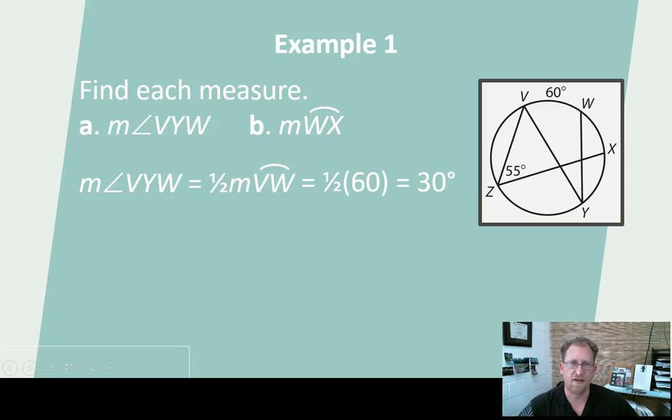Let's do an example of the kind of things you will encounter in class. So if angle VYW, and that is right here, VYW, if we need to find the angle there, and then we also need to find the measure of arc WX. So this is 60 degrees of arc. This is an inscribed angle, so it should be half the intercepted arc. So if this is 60 degrees of arc, this should be 30 degrees, half of the intercepted arc.